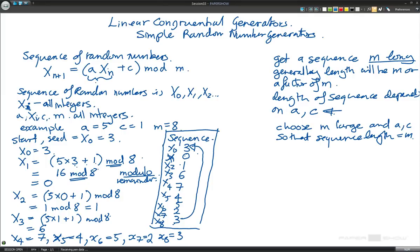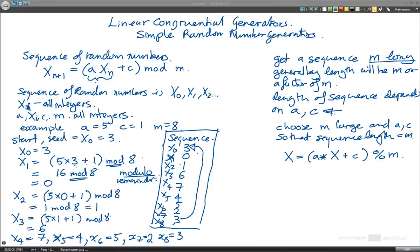In C, if we were to program this, we would say X is equal to a times X plus c percent m. So now, it's worth noting that in the Wikipedia page, there are examples of different values for a and c and m.